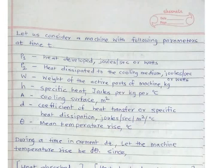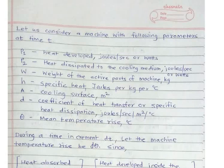Let us consider a machine with the following parameters at any particular time instant T. P1 is heat developed in Joules per second or Watts. P2 is heat dissipated to the cooling medium in Joules per second. W is weight of the active part of the machine in kg. Small h is specific heat in Joules per kg per degree centigrade. Capital A is cooling surface in square meters. Small d is coefficient of heat transfer or specific heat dissipation in Joules per second per square meter per degree Celsius. And theta is mean temperature rise in degree Celsius.